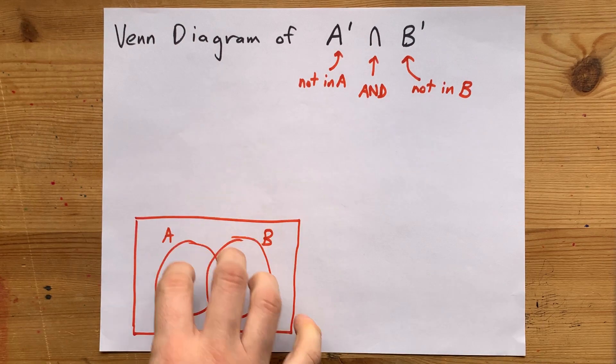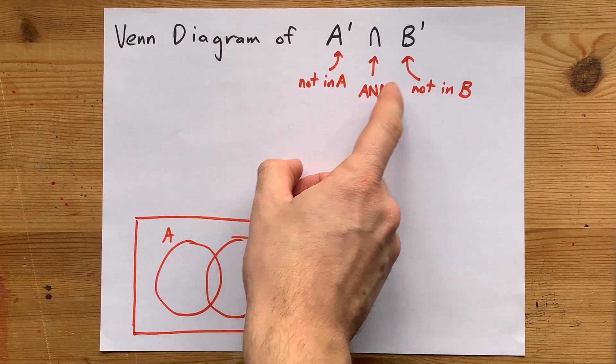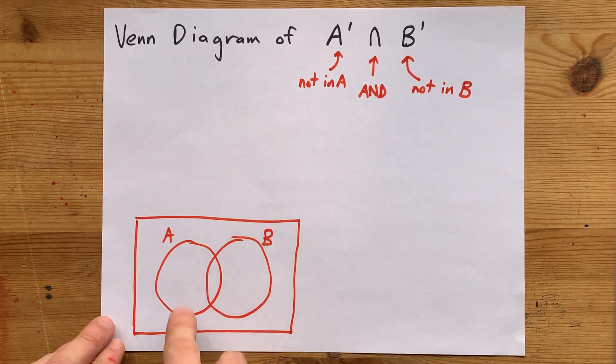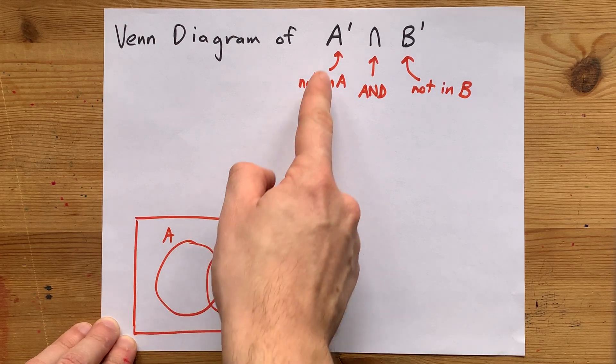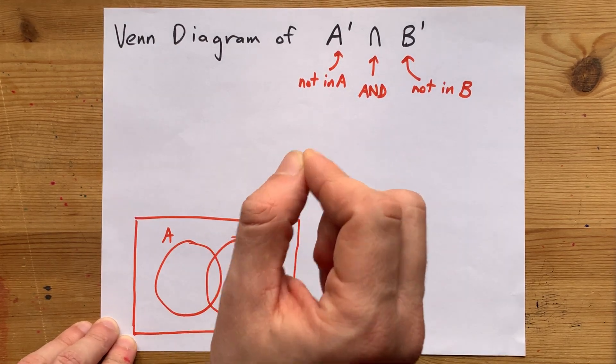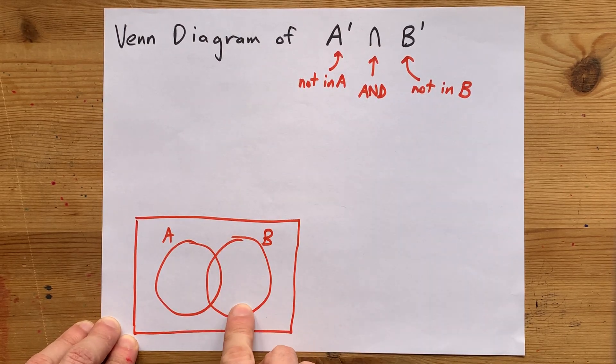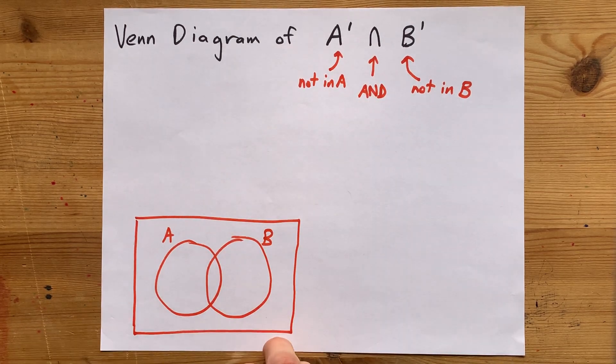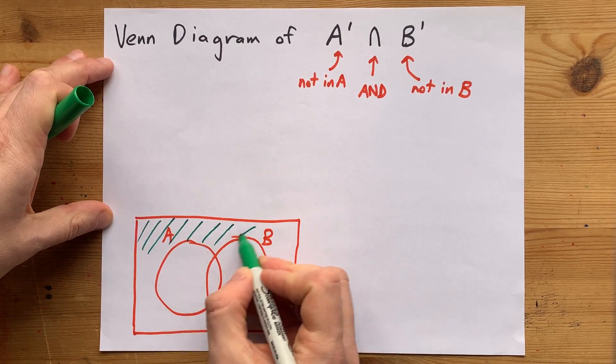So if we're going to shade a section of this diagram, it has to be a section not inside of A and also not inside of B. Well, that means that we're not allowed to shade anything in this A circle, because it's inside A, and we explicitly require not in A. And we can't shade anything inside B either, because we're not allowed to be inside of B. The only section we are allowed to shade here is the outer portion.